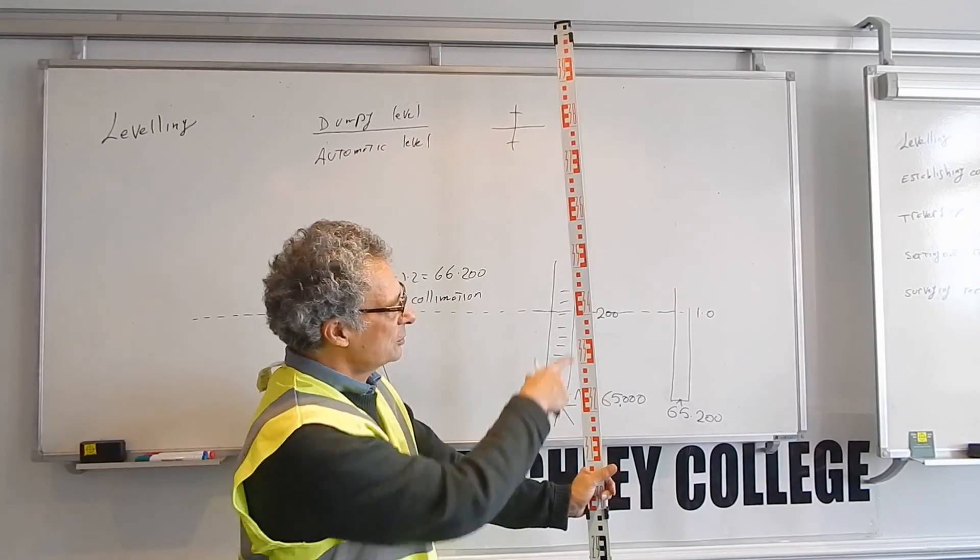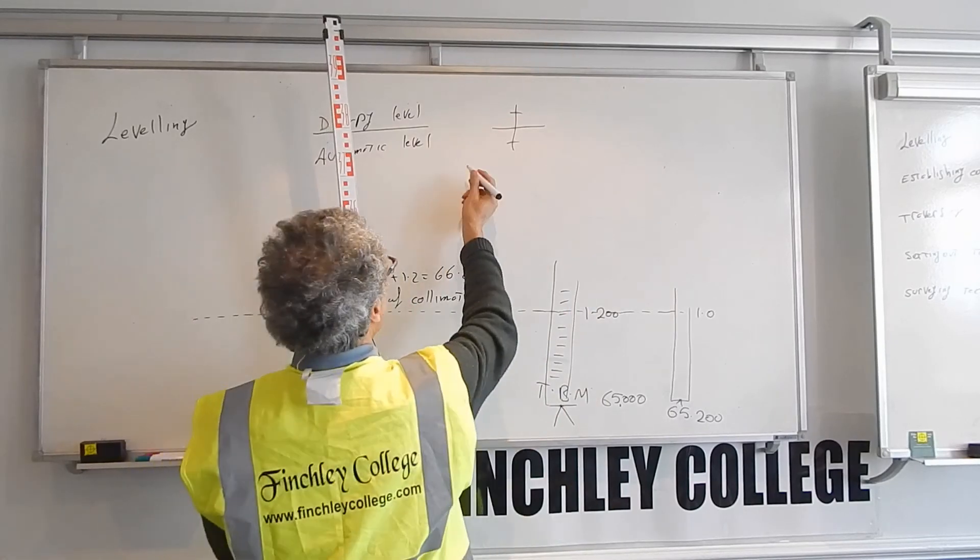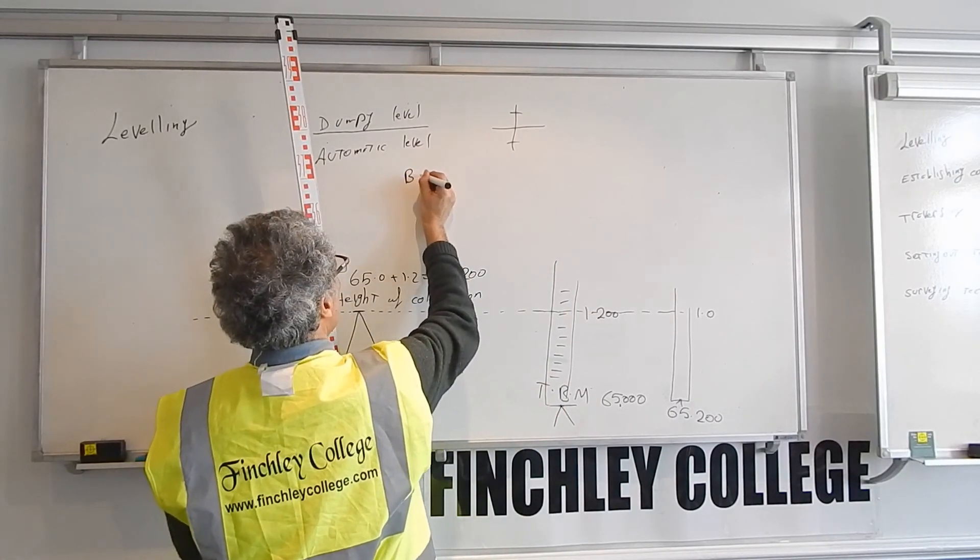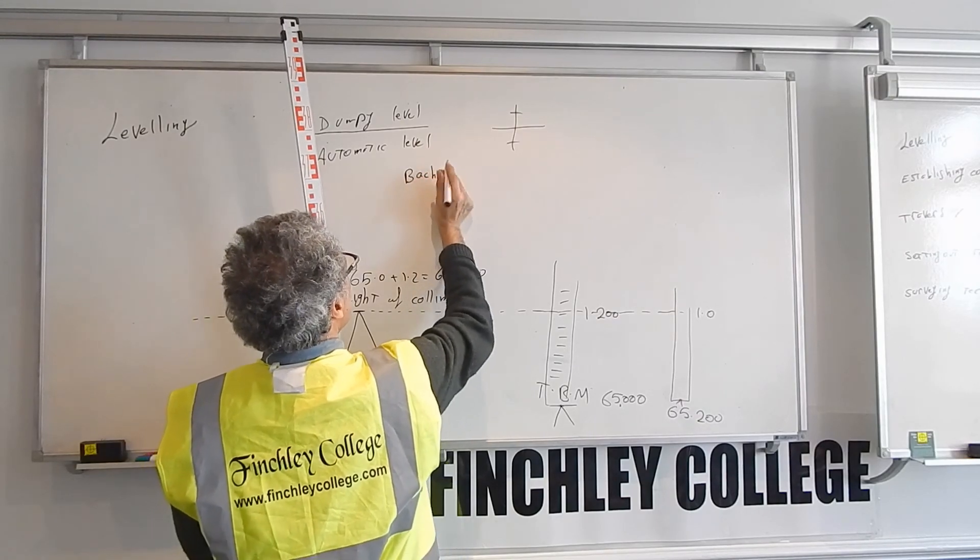If we do very precision leveling, not too far away in a room or something where you can see the markings, we turn this side and use the back of the staff. Otherwise, we usually use this side. Leveling format includes backsight, intermediate sight, foresight.